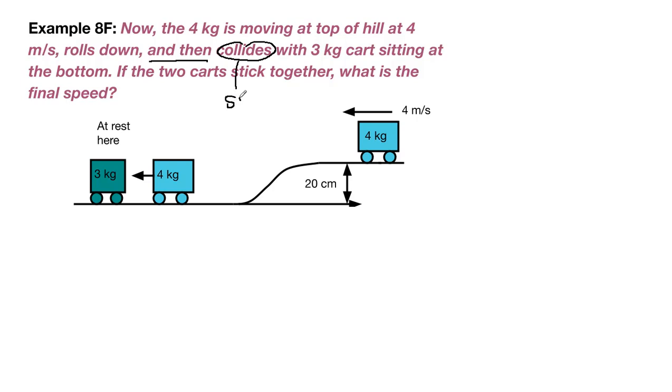That means that the collision is step 2 and the step 1 is going to be the energy problem that involves rolling downhill. So step 1 energy, step 2 momentum.